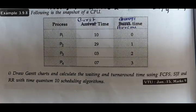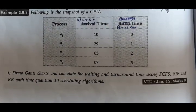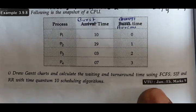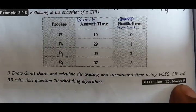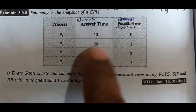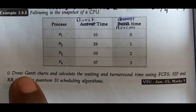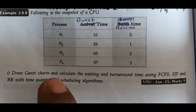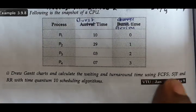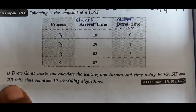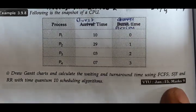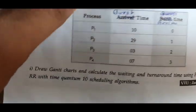Hello students. Now we will solve one more question from the question paper. It was asked in January 15th for 9 marks. What the question is? They given processors, burst time and arrival time, and you have to draw a Gantt chart and calculate the waiting time and turnaround time using FCFS, SJF, and Round Robin with time quantum 10 scheduling algorithm. Let's see how to solve.